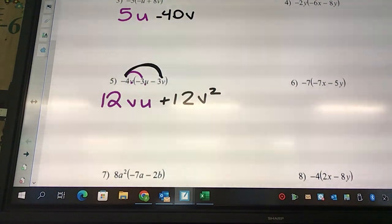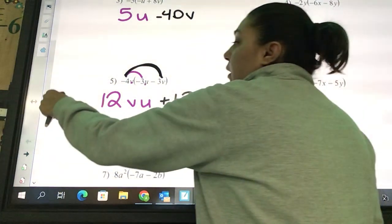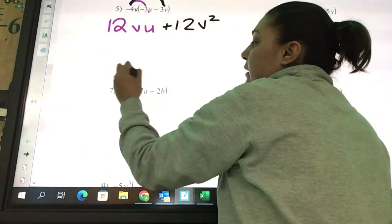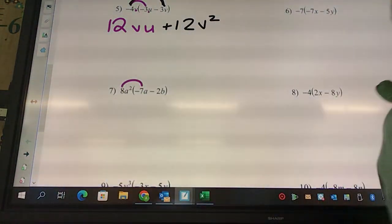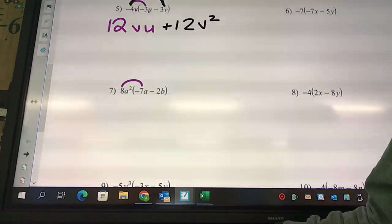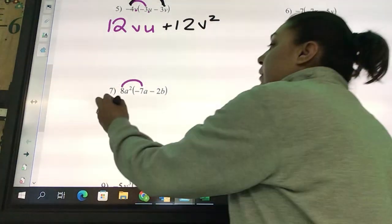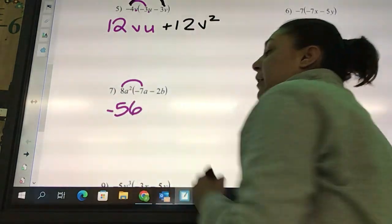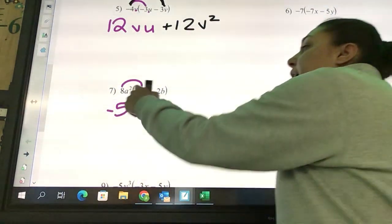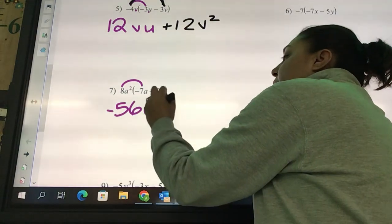We're multiplying the bigs and adding up the littles. Seven... looks like eight times negative seven is negative 56. How many a's do we have? Three. He's got two and he's got one, so that's going to give me a³.